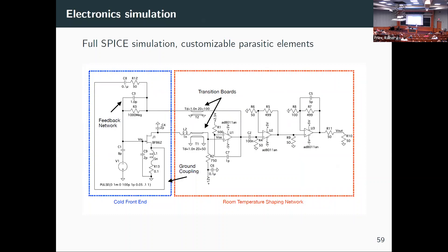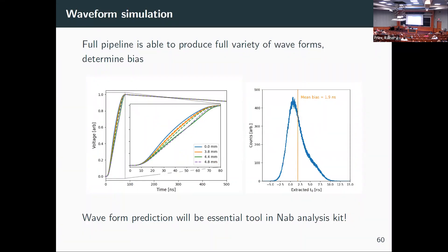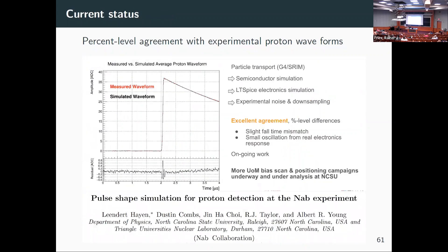We've done SPICE simulations for the electronics, and eventually we can make pulse shapes that depend on where we hit on the pixel due to geometrical effects. We can reconstruct timing biases we would have if we weren't using our model. The bottom line: if we didn't go through this whole exercise, we would have a two-nanosecond bias — an order of magnitude larger than our required 0.3 nanoseconds. This will now be the standard procedure, which places a computational load on the analysis.